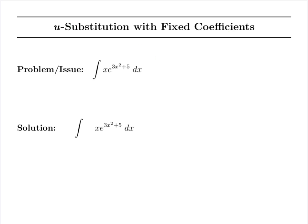So the problem is when we start picking our u-substitution here, we'll notice that 3x squared plus 5 is inside of our exponential. So that's a really good idea to pick for u.